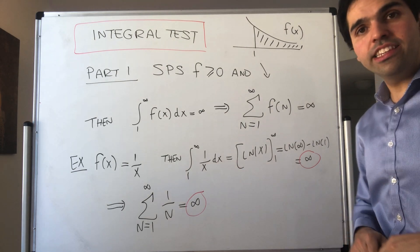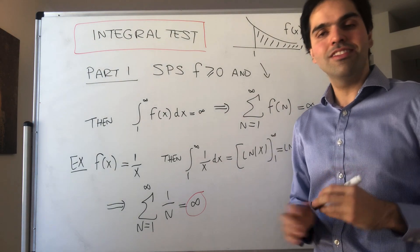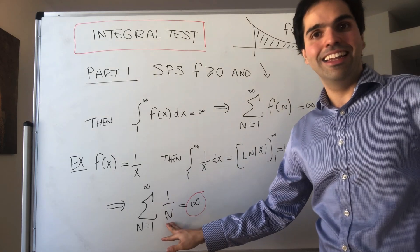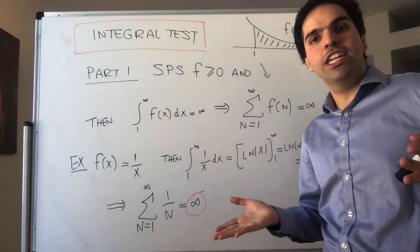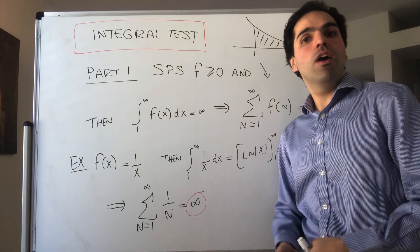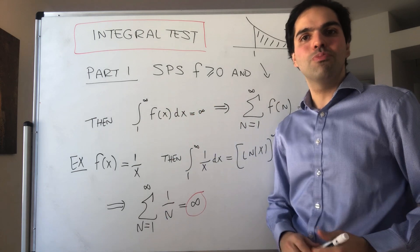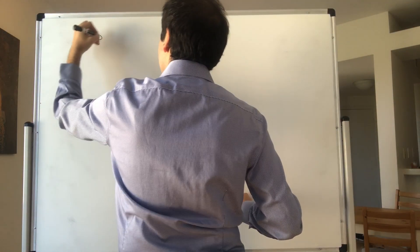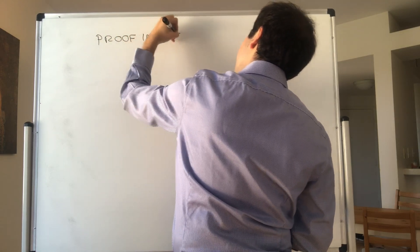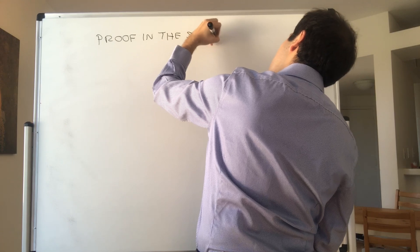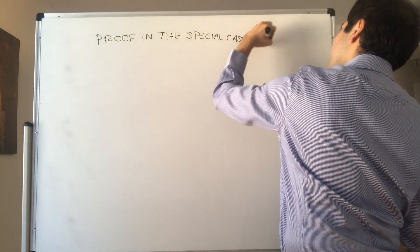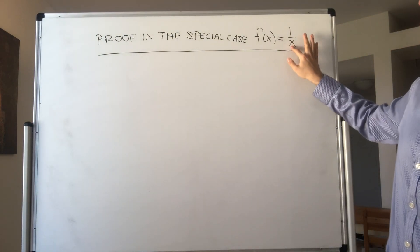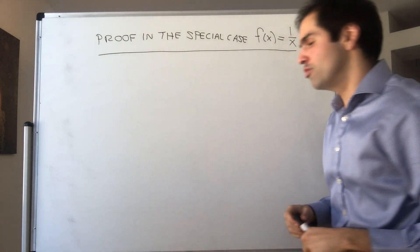Now let's prove the integral test, and I'll do something slightly embarrassing: a proof by example. I will just prove that the series of 1 over n is infinity, though there's not a huge loss of generality — in what follows, just replace 1 over x with f of x and you get the proof of the integral test. So let's do the proof in the special case where f of x equals 1 over x.